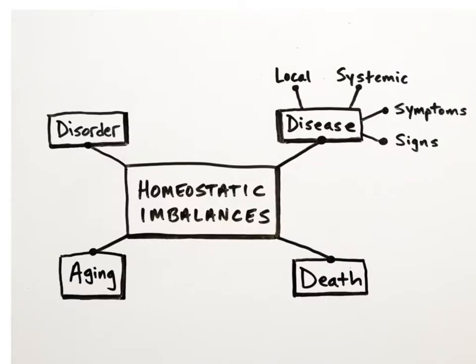A healthy body is one where all of the homeostatic mechanisms are working efficiently, and all of the body's controlled conditions are maintained within their normal ranges. Any disruption of homeostasis is called a homeostatic imbalance. If any of the body's negative or positive feedback mechanisms fail to work properly, this delicate balancing act of homeostasis can be thrown off, and a disorder, disease, or death may occur.